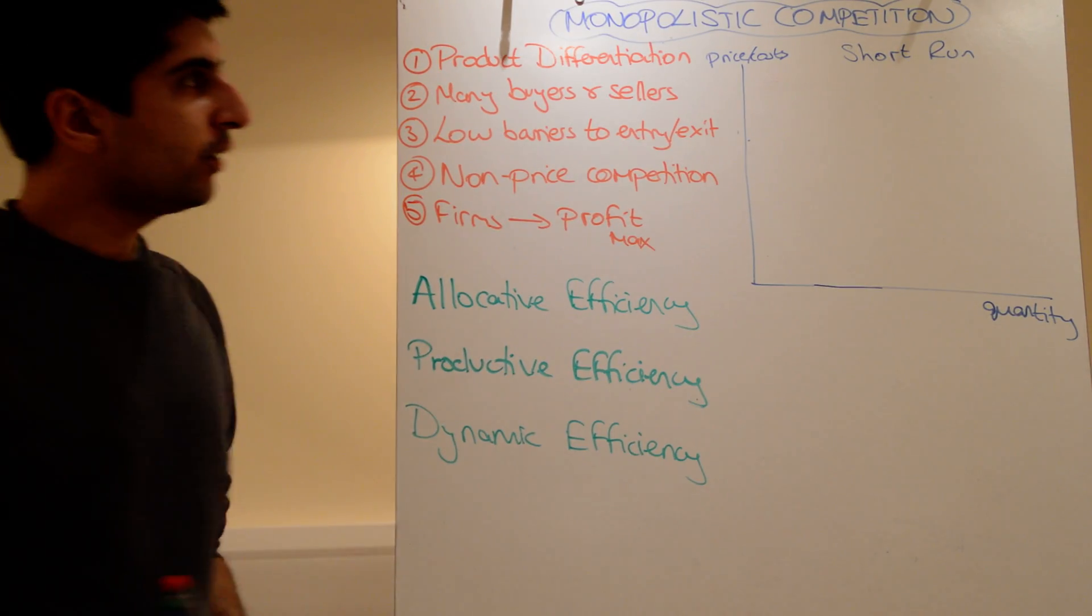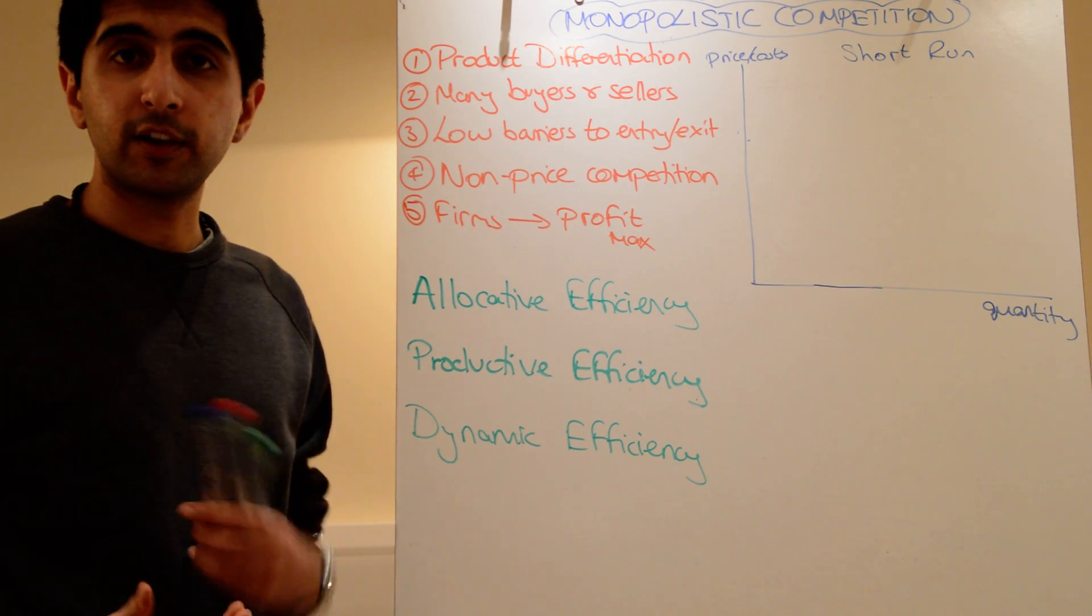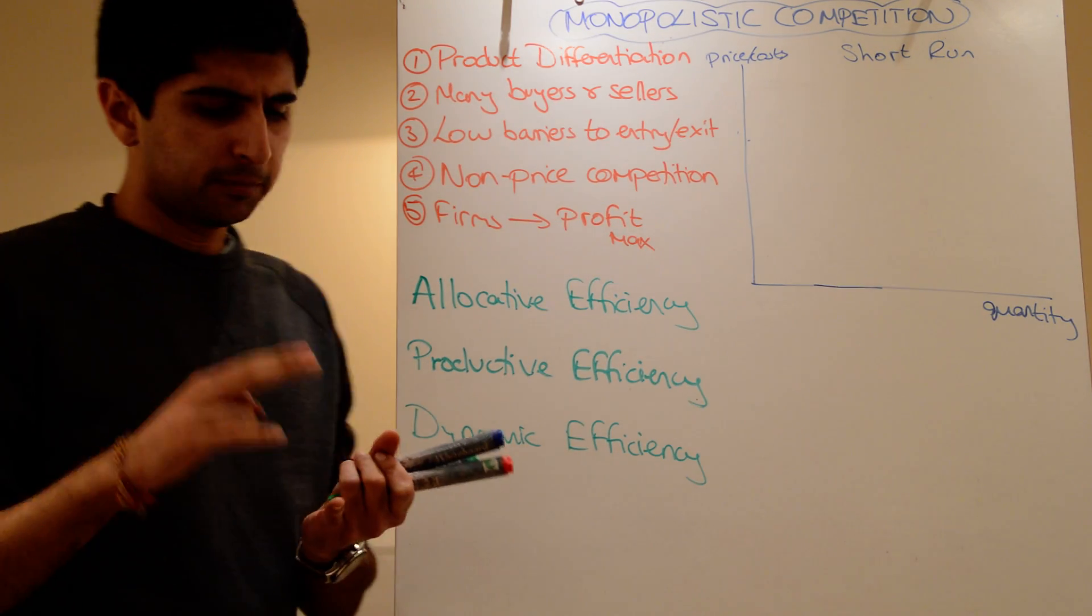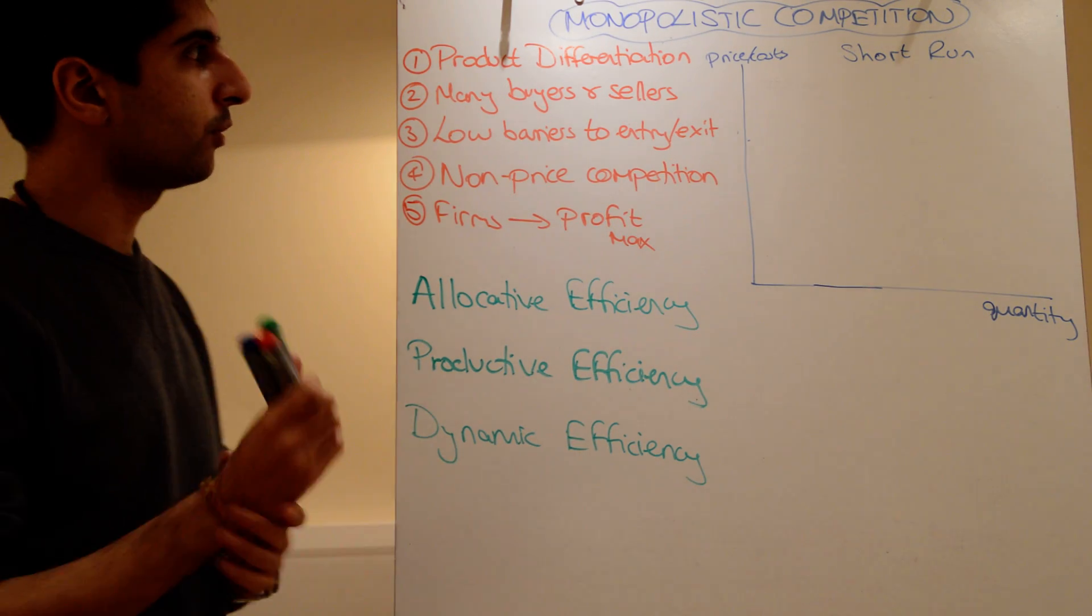Okay, monopolistic competition, a very interesting market structure. A theory which was derived in the 1930s when the theory of monopoly and perfect competition didn't quite apply to all firms out there and all industries out there.